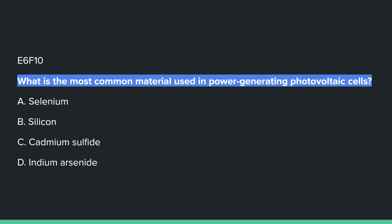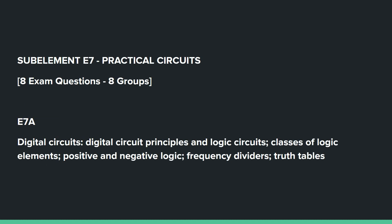E6F10: What is the most common material used in power generating photovoltaic cells? B, silicon. That concludes sub-element E6. Thank you for joining us, and hopefully you will continue on with sub-element E7.